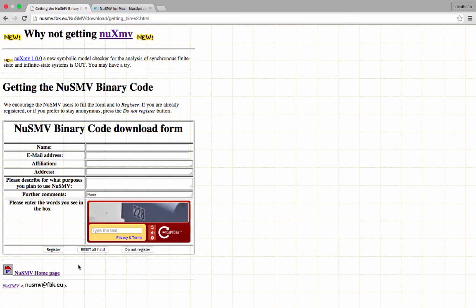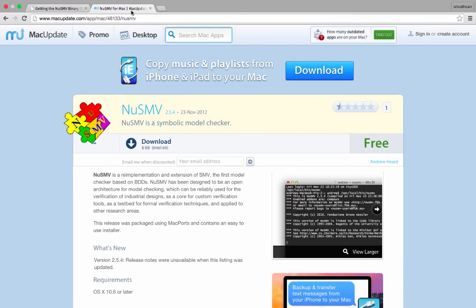Clicking on that link brings you to a registration page. Once you register, you will get to a page from where you can download the binary corresponding to your architecture. Mac users can download NuSMV from this page.